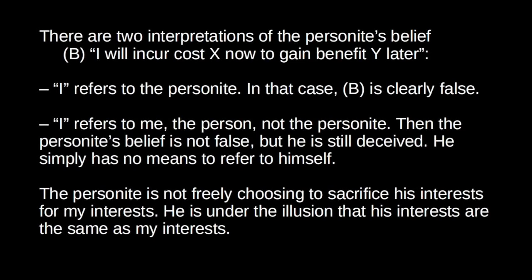There is an alternative view: when the personite believes 'I will incur cost X now in order to gain benefit Y later,' perhaps the 'I' refers to me, the person, not the personite. So the term 'I' is an indexical that picks out persons, not personites. Perhaps we simply don't have a tool in our language and conventional thinking to refer to personites. In that case, the personite's belief is not false — the personite correctly believes that the person will incur cost X now to gain benefit Y later. But the personite is still mistaken in a very important sense: they have no means to refer to themselves, no beliefs about themselves, and cannot consider their own interests. So the personite's preferences are based on error or ignorance, and the personite certainly doesn't share my interests.